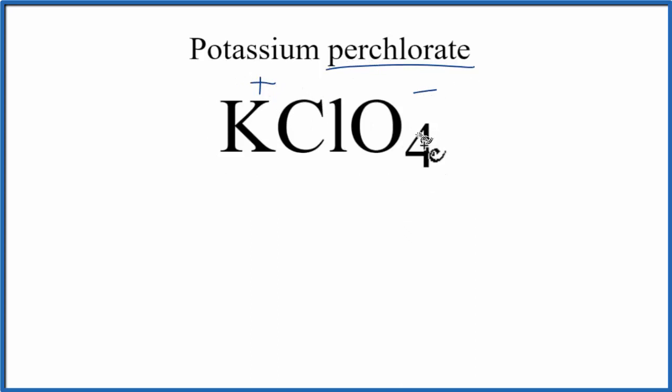The positive and the negative are attracted, that makes your ionic bond. To write the Lewis structure, we'll first write K plus for the potassium ion, and then we'll put ClO4 here. But we need to do the Lewis structure for ClO4 because it's a group of atoms.